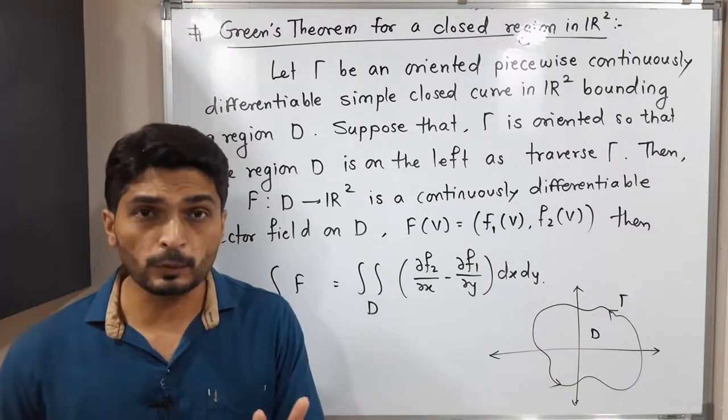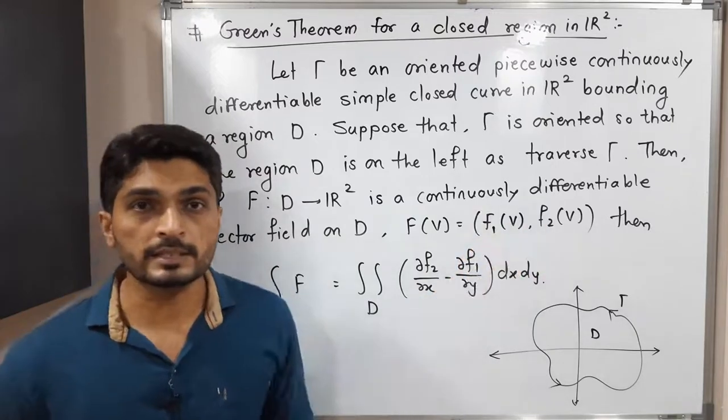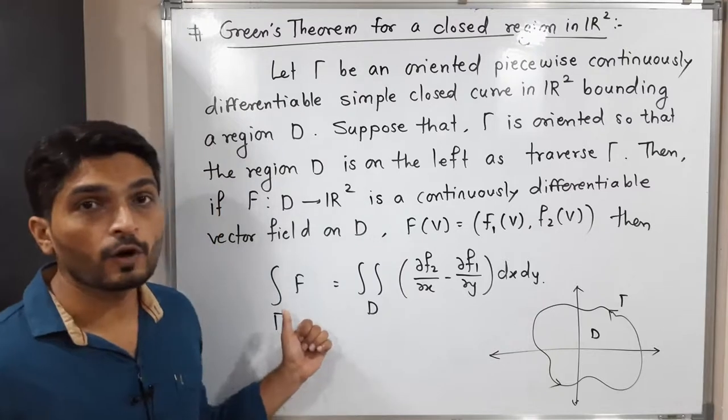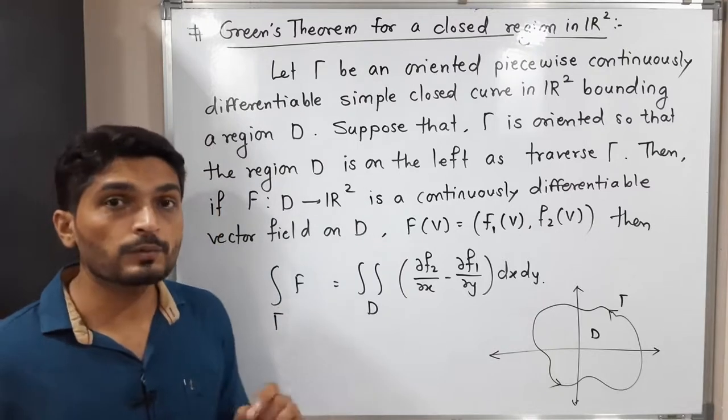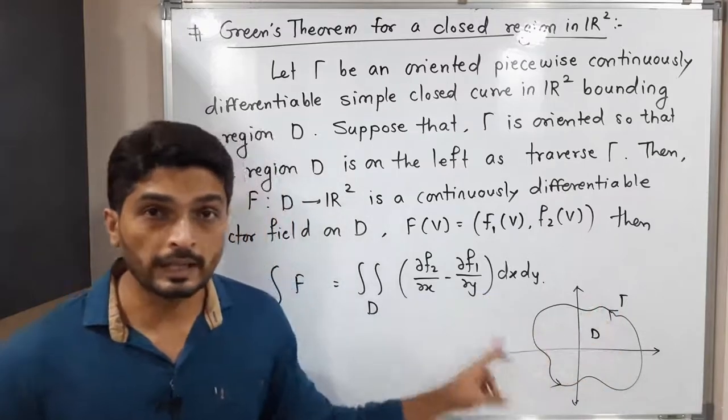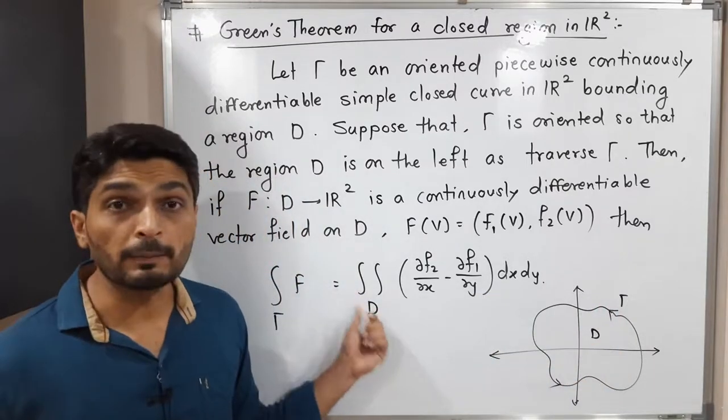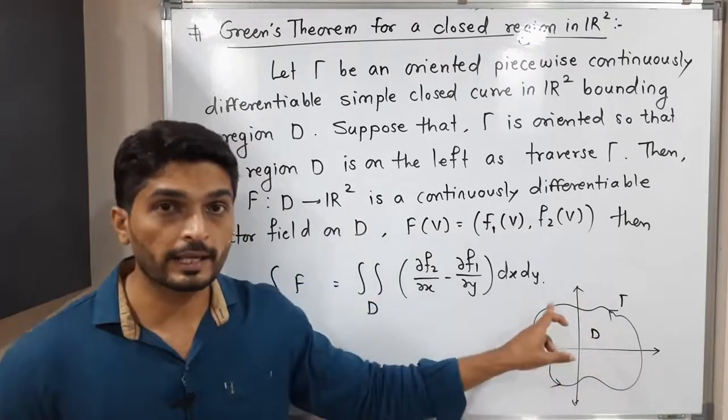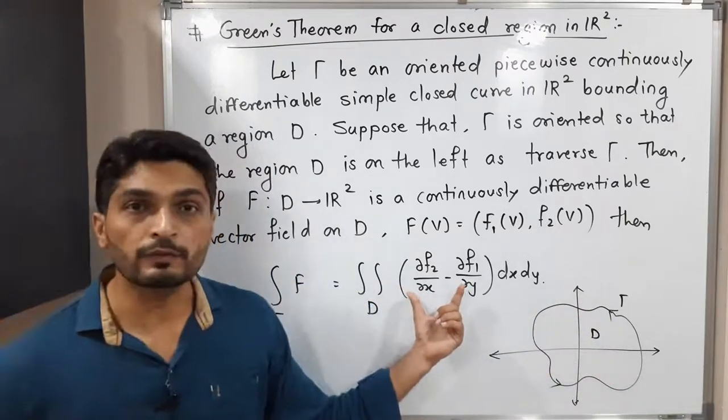Green's theorem says the line integral of F over gamma—that means we are finding the line integral of F over this closed curve gamma—is equal to the value of double integration over this region D which is enclosed by gamma.